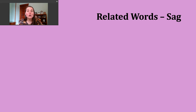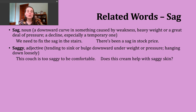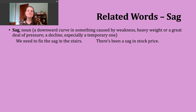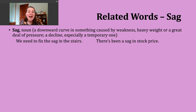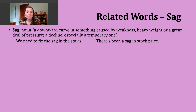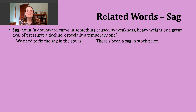Now let's talk about some words related to our verb sag. The first is the noun sag — same spelling, same pronunciation. When used as a noun, it might refer to a downward curve in something caused by weakness, lack of strength, heavy weight, or some type of pressure. An example: 'We need to fix the sag in the stairs' — imagining steps having a downward curve that needs to be fixed so someone doesn't fall and hurt themselves. A second way to use the noun sag is to talk about a decline, especially one thought to be temporary — for example: 'There's been a sag in stock price,' meaning the stock price has declined.